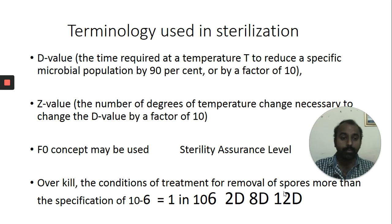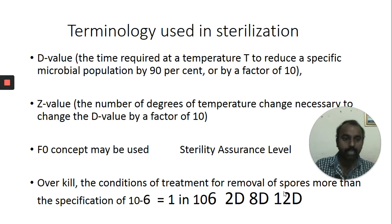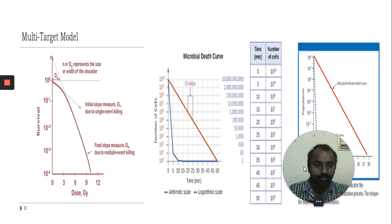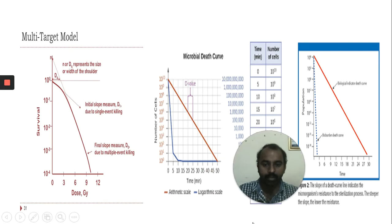The complete removal of microorganisms depends upon thermal stability as well as the sterilization method selected for a particular product. These fundamental definitions must be understood before going into any sterilization process. Graphs showing dose versus survival are used to depict how well sterilization performs — for radiation sterilization, the dose is given in gray (Gy) or megarads.